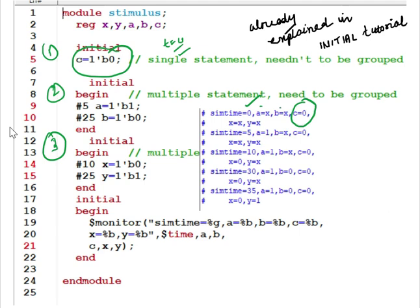Inside the Initial Block, all statements execute sequentially. The first statement has a delay of 5 nanoseconds, so at t=5ns, a will be one. Then at t=10ns, x equal to zero is executed. Then since statements execute sequentially, five plus twenty-five gives t=30ns where b equal to zero. You can see at time equal to thirty, b equals zero.